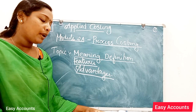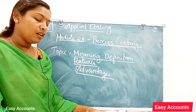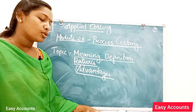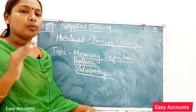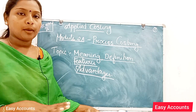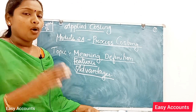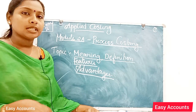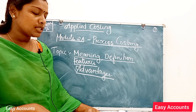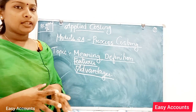The next feature is separate accounts for each process. A separate process account is prepared for each process or department so as to ascertain the cost of each process. The next feature is that the output of one process becomes the input of the next process. The finished product of one process becomes the raw material of the next process until the fully finished product ready for sale is obtained.